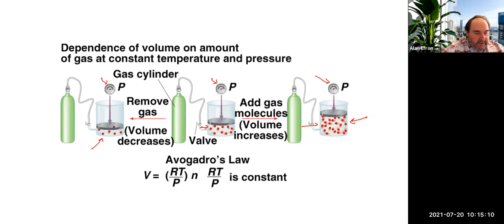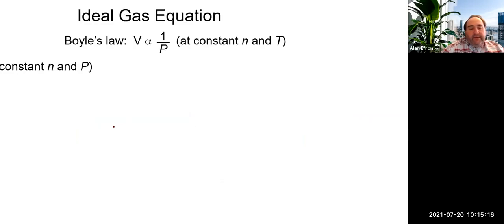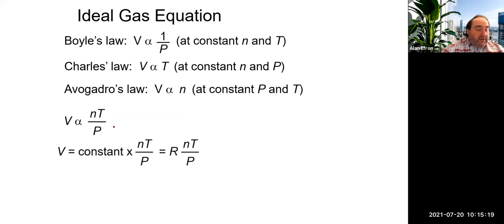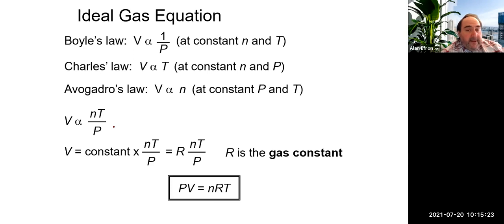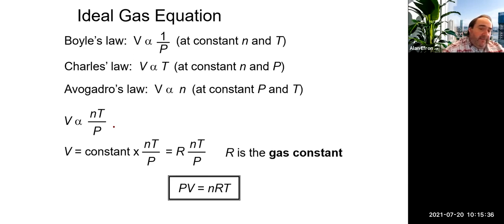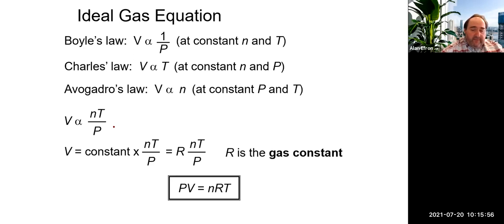Combining Boyle's Law, Charles's Law, and Avogadro's Law together gives us the ideal gas law — the granddaddy of them all. The ideal gas law is PV = nRT. Unlike the other gas laws which involve a before-and-after situation with two sets of values, the ideal gas law applies to a single situation.